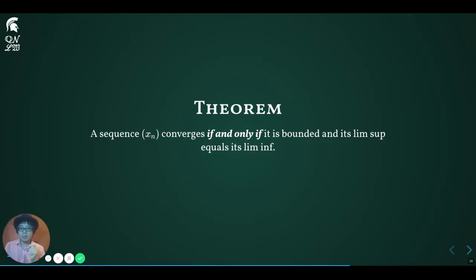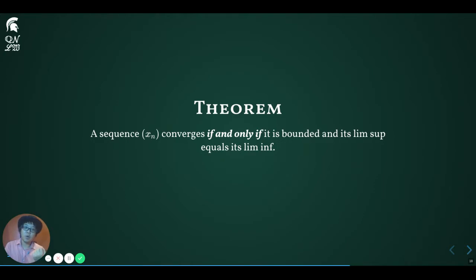If we return to the examples that we did in the previous lecture, we see that this agrees with what we have seen. For example, the sequence with x_n = 1/n converges, and we saw that the LimSup and LimInf both equal 0. And the sequence with x_n = sin(nπ/3) does not converge — the LimSup is positive √3/2 and the LimInf is negative √3/2, and they are not equal.